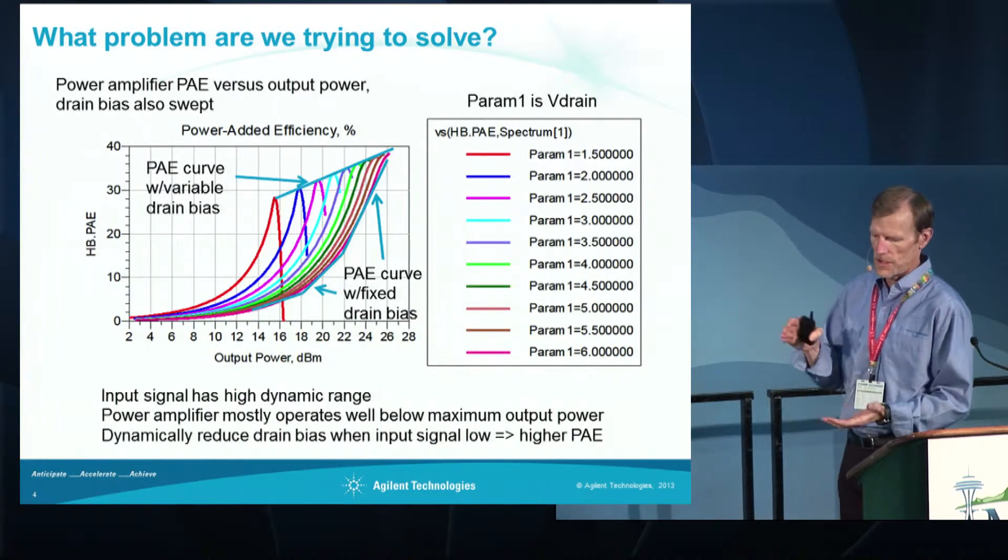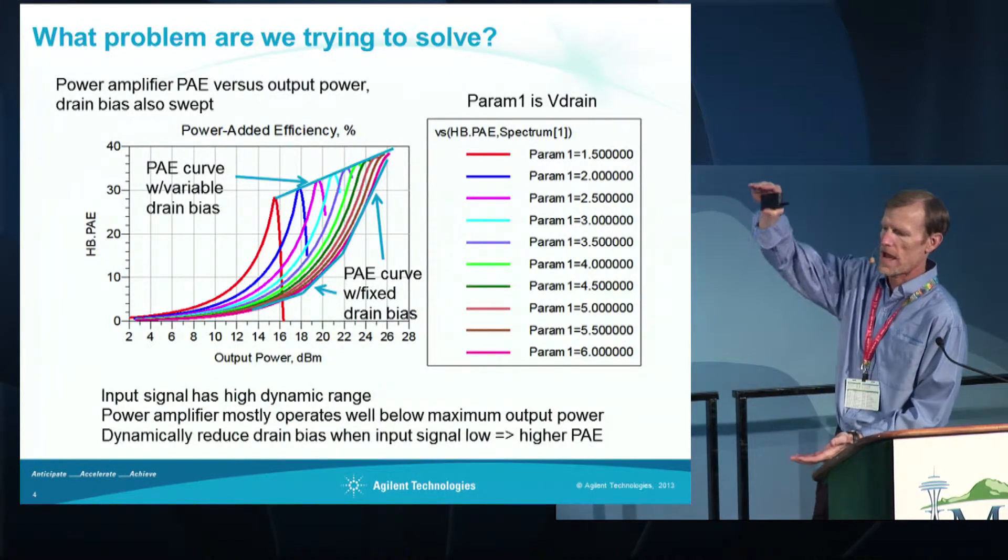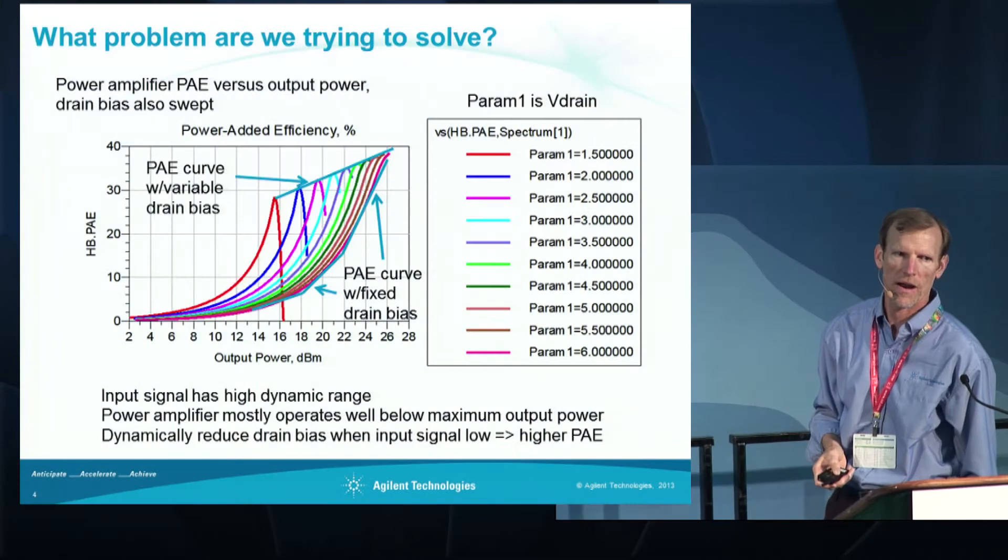In basic terms, if you have a power amplifier biased for high level signals and your signal is small, then you're basically wasting a lot of power. The idea is that if you can dynamically adjust the bias to track the amplitude of the input signal, then you can keep the amplifier operating along the curve of higher power added efficiency.